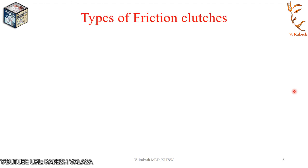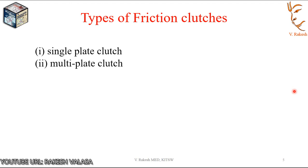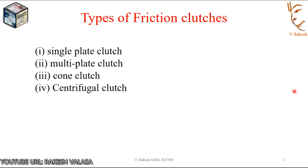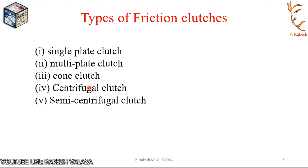Friction clutches are divided into five types: single plate clutch, multi-plate clutch, cone clutch, centrifugal clutch, and semi-centrifugal clutch. We will now see a brief discussion about each type in the following slides.